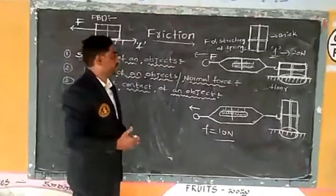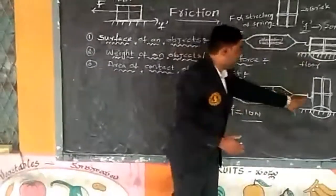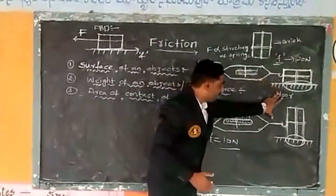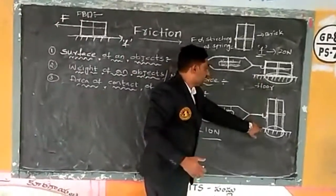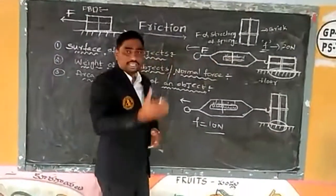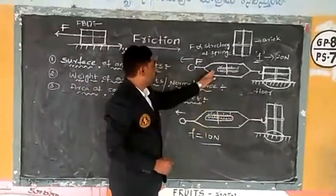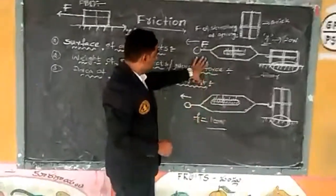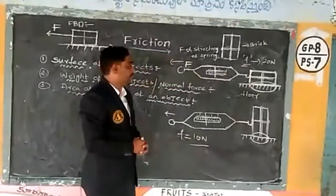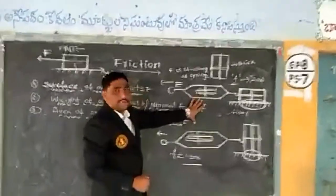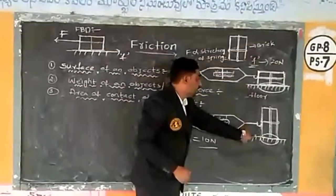What can we conclude, dear students? When we pull the brick kept horizontally and then vertically using the same spring balance, the magnitude of frictional force remains the same. In both cases we used the same brick and the same spring balance, but the orientation changed — the contact area is large when horizontal, and smaller when vertical.